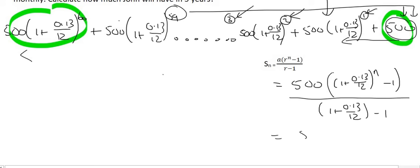Now at the bottom, the 1's cancel. And so we just end up with 0.13/12.